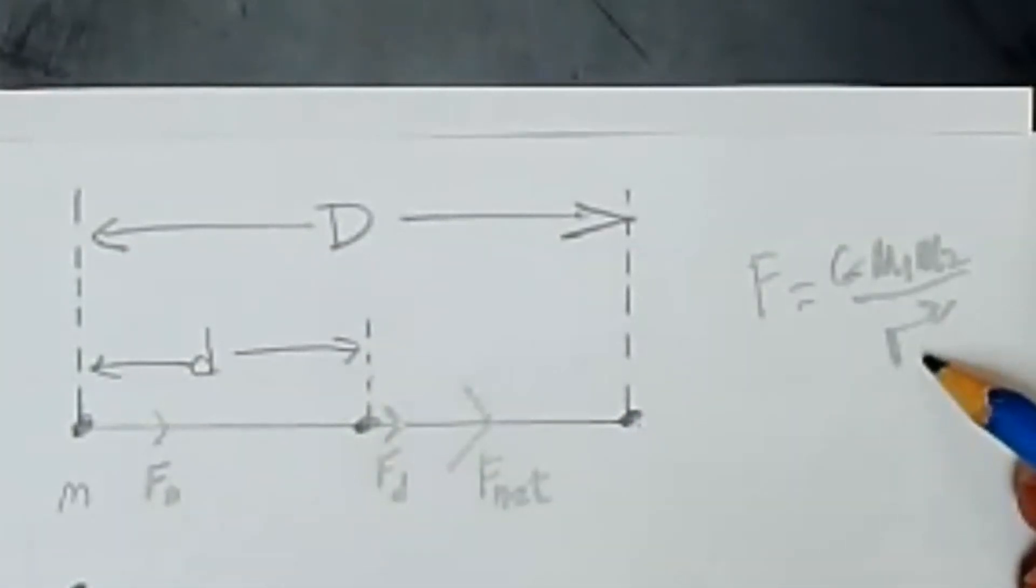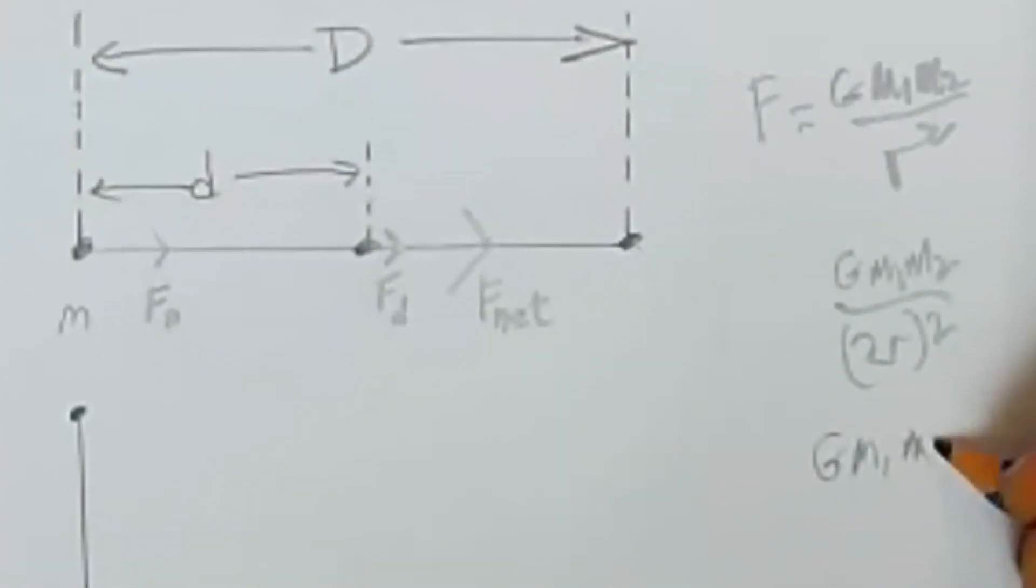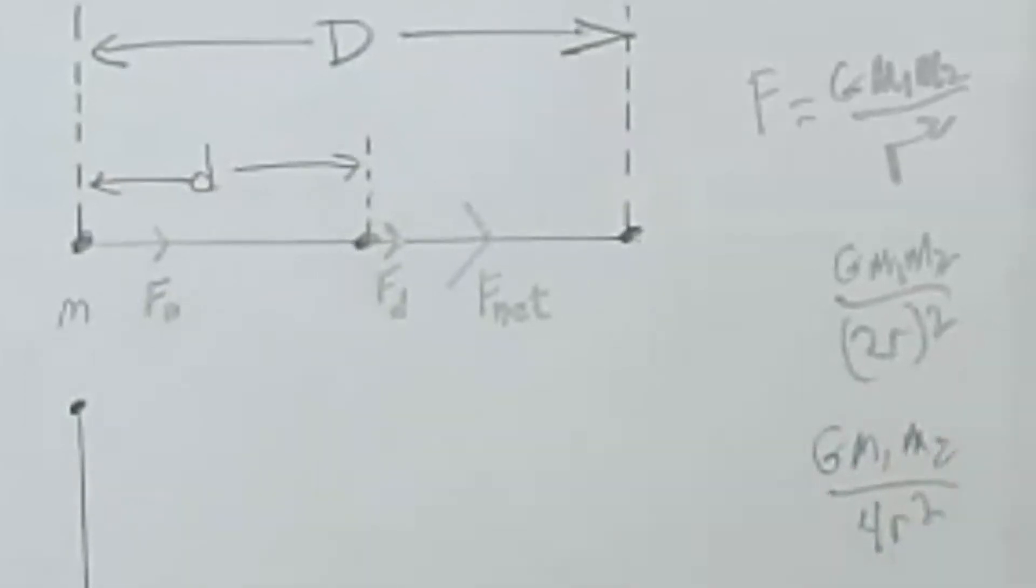So if I replace r with a distance that's now twice r, don't forget to put the total distance 2r in parentheses. So when we square that, we get Gm1m2 over 4r squared.